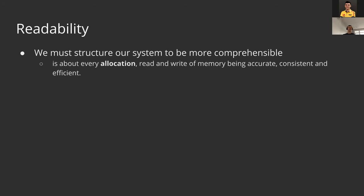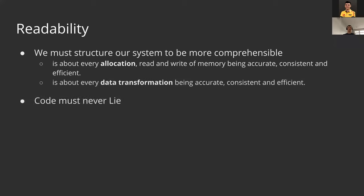Code must never lie. When we over-optimize our codebase, its behavior becomes unclear — especially to others. Each function and each method should produce exactly the value we expect. If our code does something we don't expect, it breaks our mental model of the program. We shouldn't do that.